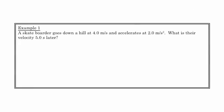Here's example one. A skateboarder goes down a hill at 4 meters per second and accelerates at 2 meters per second squared. What is their velocity 5 seconds later? So what's given? We know v₁ is 4 m/s, acceleration is 2 m/s², and time is 5 seconds. Our unknown is v₂.